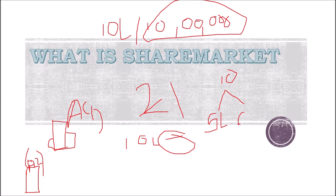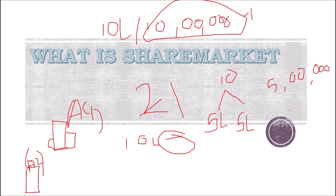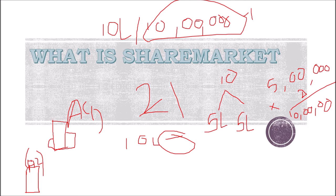The owner offers 5 lakh shares to the public at a value of two rupees each. As you know, the primary value was 10 lakhs divided by 10 lakh shares equals one rupee, but he has offered the 5 lakh shares at two rupees, thereby gaining 10 lakh rupees. He gets 10 lakhs in money and gives individuals shares in return. These shares are then traded in the market.